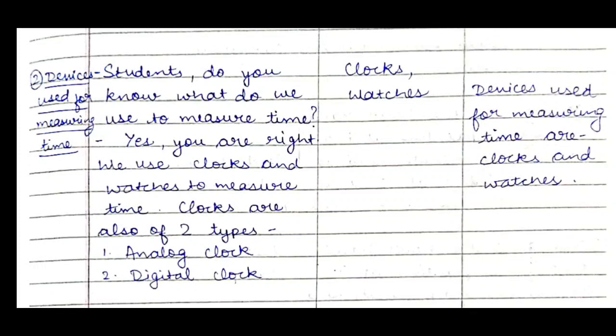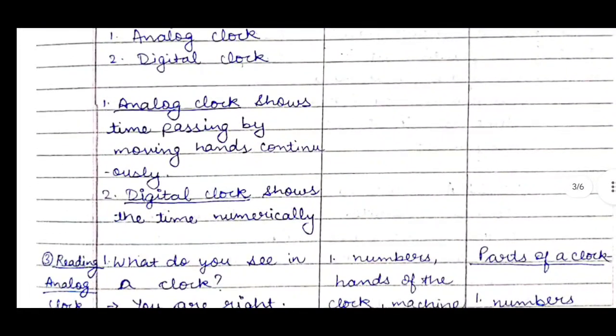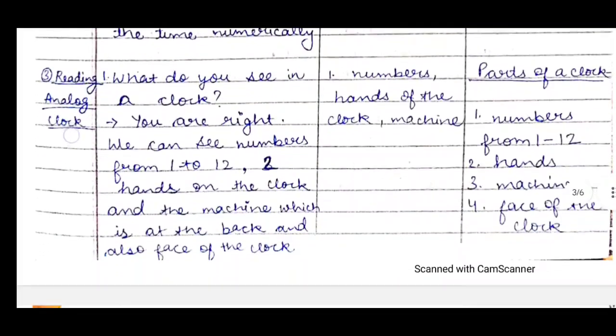We will write on the board: devices used for measuring time are clocks and watches. Then we will explain that an analog clock shows time by moving hands continuously, while a digital clock shows the time numerically — meaning it displays numbers. We will explain both in detail.